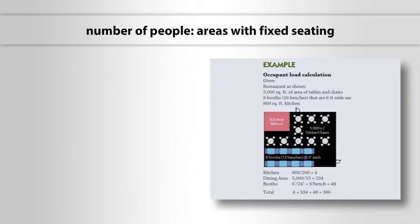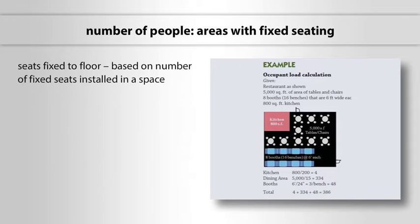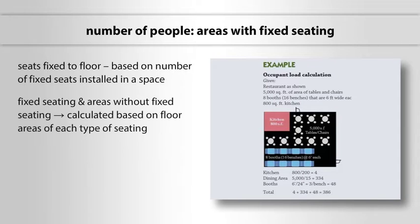The occupant load for areas where the seats are fixed to the floor is based on the number of fixed seats that are installed in a space. In those areas that have both fixed seating and areas without fixed seating, the occupant load is calculated based on the floor areas of each type of seating noted previously.